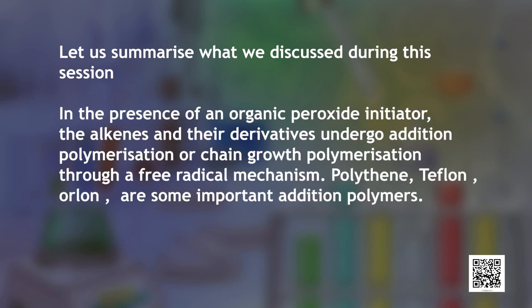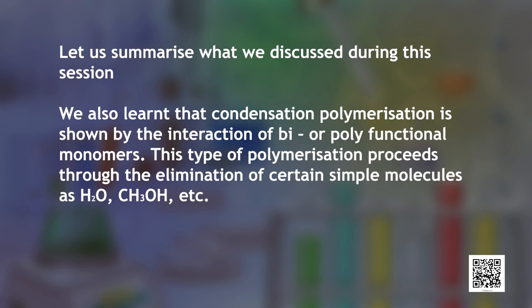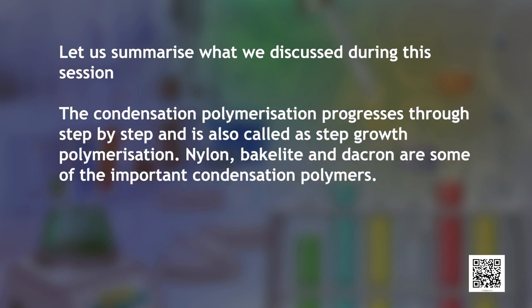Dear learners, let us summarize what we have discussed during this session. In the presence of an organic peroxide initiator, alkenes and their derivatives undergo addition polymerization or chain growth polymerization through a free radical mechanism. Polythene, Teflon and Orlon are some important addition polymers. We have also learnt that condensation polymerization is shown by the interaction of bi- or poly-functional monomers, proceeds through the elimination of simple molecules such as water or alcohol, and progresses step by step — hence it is called step growth polymerization. Nylon, Bakelite and Dacron are some important condensation polymers.